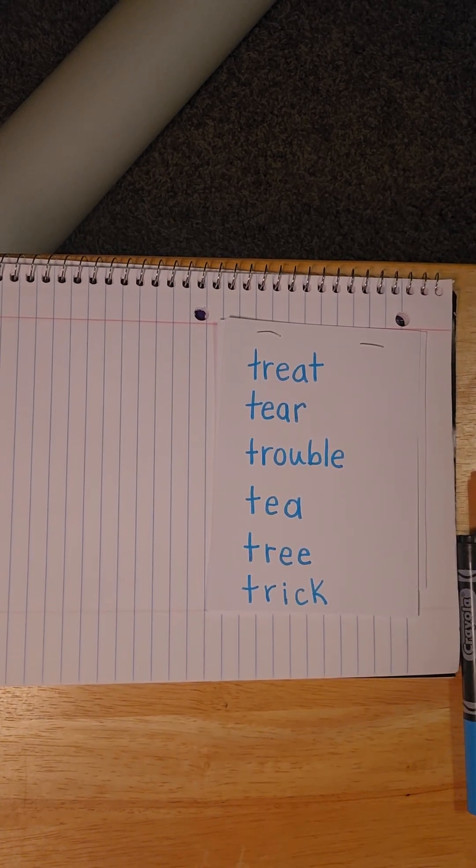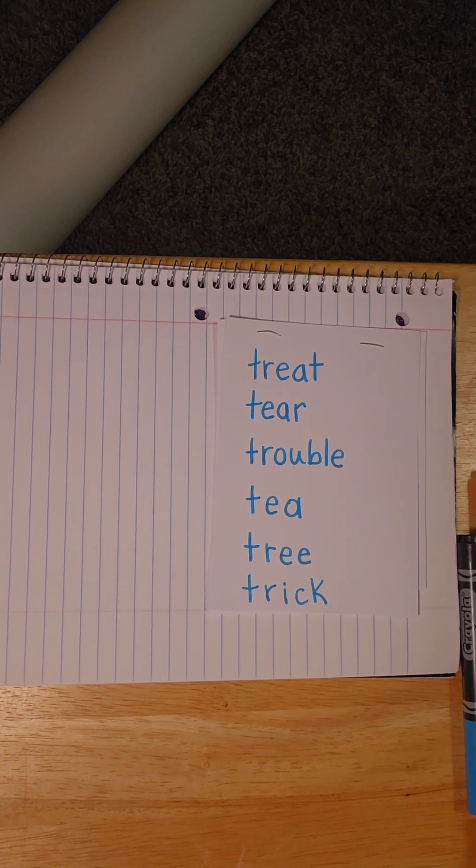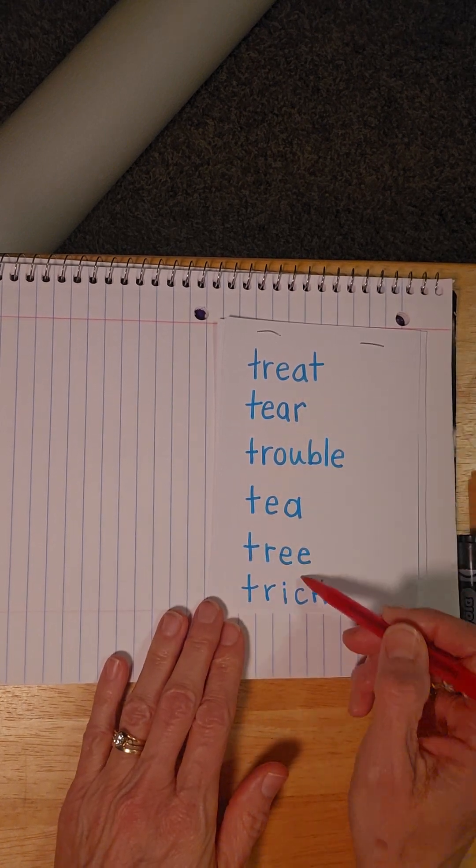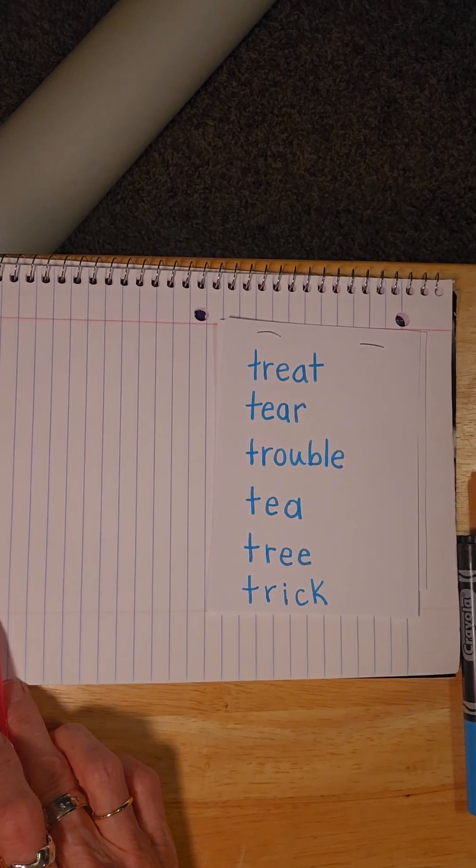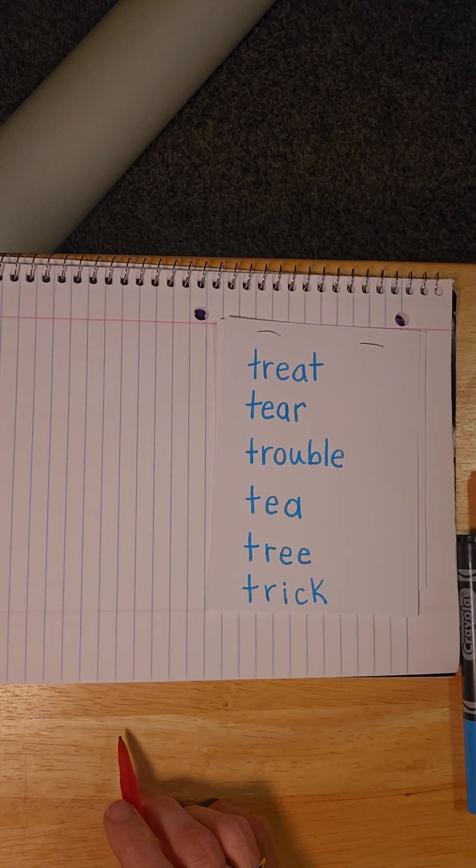Okay, we are going to work on ABC Order tonight. I want to show you a couple strategies that I use for ABC Order. The first thing I do is I see all my words right here. I like to put my words on lined paper where the lines go down, because that helps me actually look at all my letters a little better.